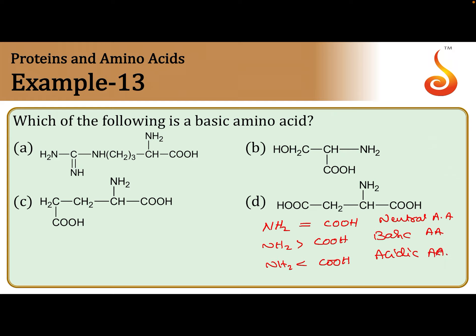So, if you take the entire structure of the molecule of an amino acid, you have to count the number of COOH and NH2 groups. In option A, there is 1 COOH and 2 NH2 groups. There are 2 NH2 groups, that is why A is a basic amino acid.